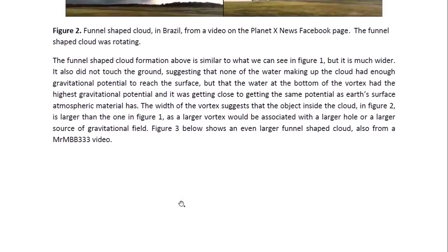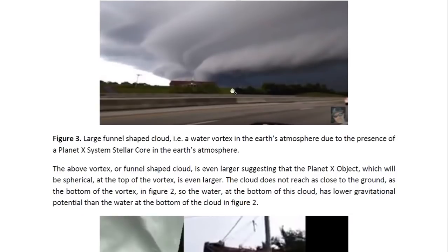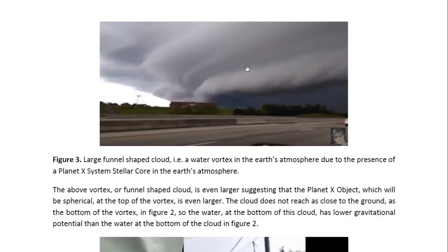In figure three, we see another one from an MBB333 video. This is an even wider funnel-shaped cloud. But like the others, it's also a water vortex in the Earth's atmosphere due to the presence of a Planet X system stellar core in the Earth's atmosphere. In other words, this cloud is part of the cloud that has formed around the Planet X system stellar core itself, so it is part of that object.